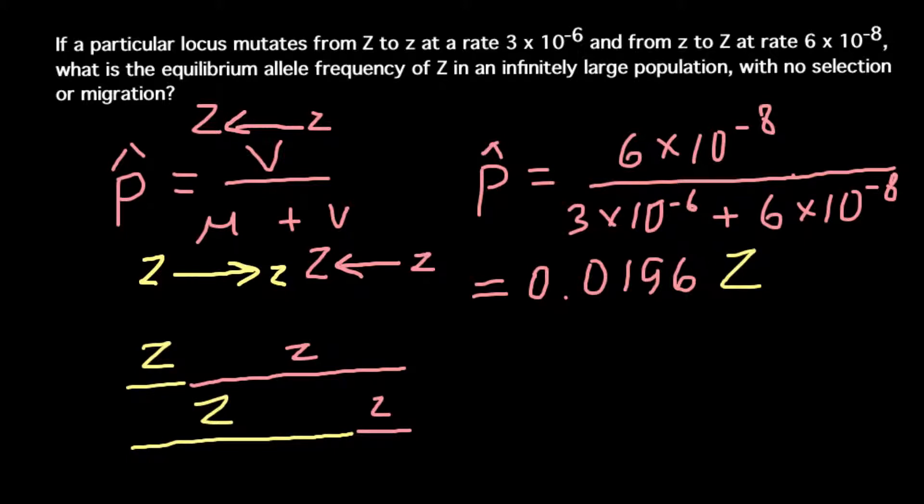But if we give enough time, both populations would end up with the same frequency and the same equilibrium, no matter what the initial frequencies were. So the initial frequency of the alleles doesn't affect our calculation.